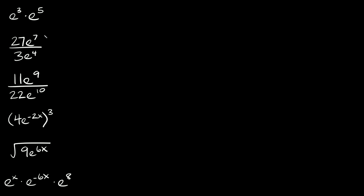We can basically treat it kind of like a variable. So here we have e cubed times e to the fifth. We have the same base, so we can simplify this as e and since we're multiplying we can just add the exponents together. Three plus five is equal to eight, so this is equal to e to the eighth.